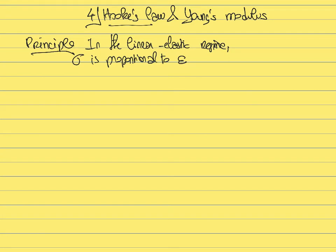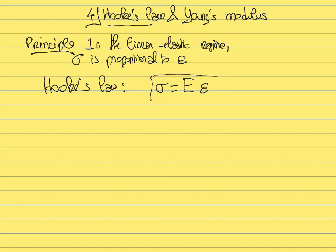Hooke's Law can be written as: stress is proportional to strain. We need to define a proportionality constant, which in this case is the Young's modulus. The Young's modulus is the proportionality constant that relates the normal strain to the normal stress — here we are talking about normal deformation.